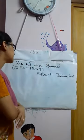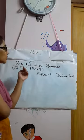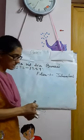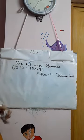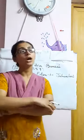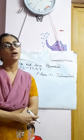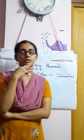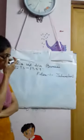Ziauddin Barani was born in 1283 and lived till 1359. He was born in Baran, which is why he is known as Ziauddin Barani. He was a very famous court author, mainly active during the time of Muhammad bin Tughluq and also during Firuz Shah Tughluq. He wrote accounts of Firuz Shah's administration and some accounts of Muhammad bin Tughluq's administration as well.